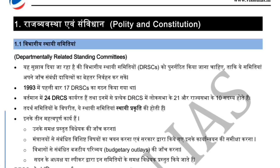First topic: we have already finished polity, and then done another subject. In one video, we will finish each chapter. So let's start. First, there is a society topic. We have a critical level related to the department-related standing committee. It is very important that the job of department-related committees needs complete understanding. DRSCs are called Departmentally Related Standing Committees. There are 24 Departmentally Related Standing Committees, abbreviated as DRSC.